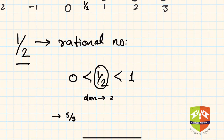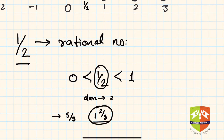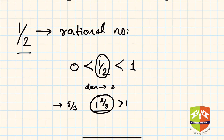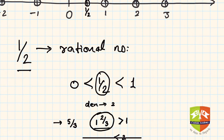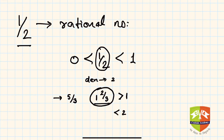Let us take another example: five upon three. To represent five upon three on the number line — it is nothing but one whole two upon three as a mixed fraction. That means one full and then two thirds, so this number is clearly greater than one. And it is also less than two, so intuition says it lies somewhere between one and two.